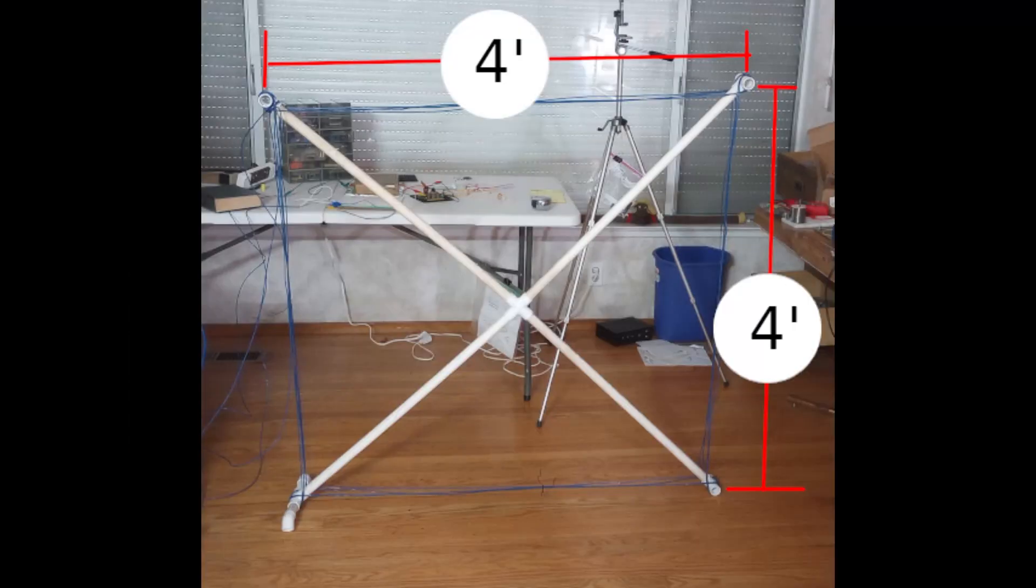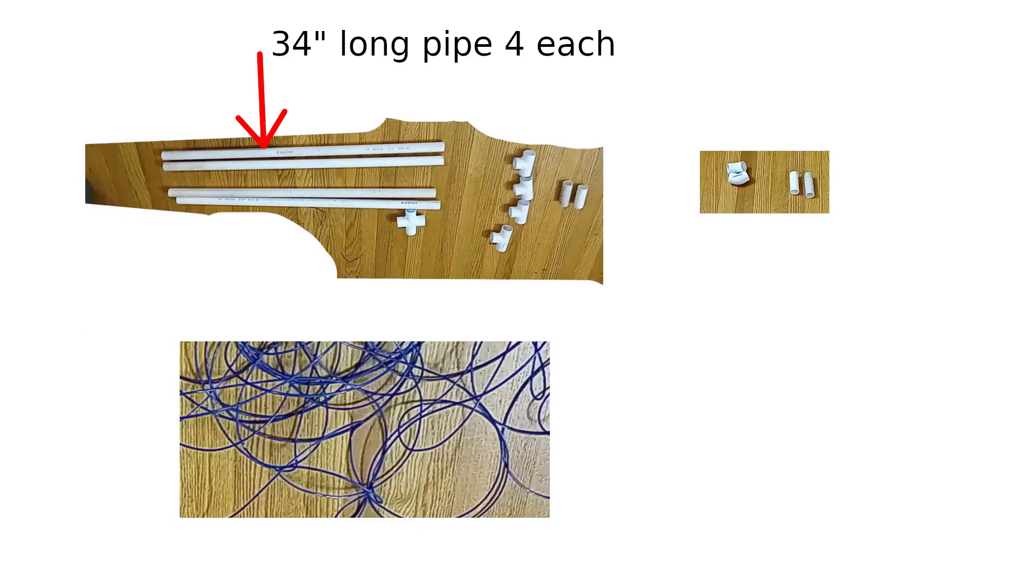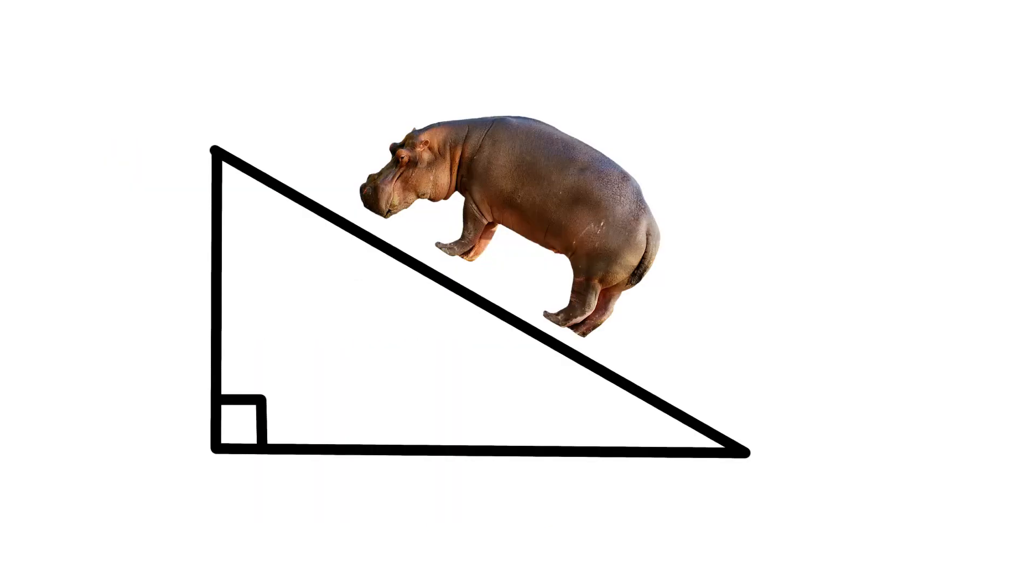To make this 4' x 4' loop antenna, I used PVC parts that I had on hand. I needed four 34-inch long lengths of PVC pipe. To understand why they're 34 inches, remember that that Greek guy told us how to work out how long this hippopotamus is.